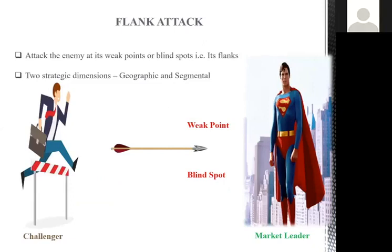The flank attack is different from the direct frontal attack. In a flank attack, the attack targets the blind spot or weak point of the market leader. There are different market players — leader, challenger — roughly in a 40, 30, 20, 10 division. The challenger attacks the market leader's weakest point. There are two strategies: geographical and segmental. In a geographical flank, you identify a geography where the leader is lacking and attack there. In a segmental flank, you identify a targeted segment where the market leader is weak. It is a more strategical attack than the brute-force frontal approach.